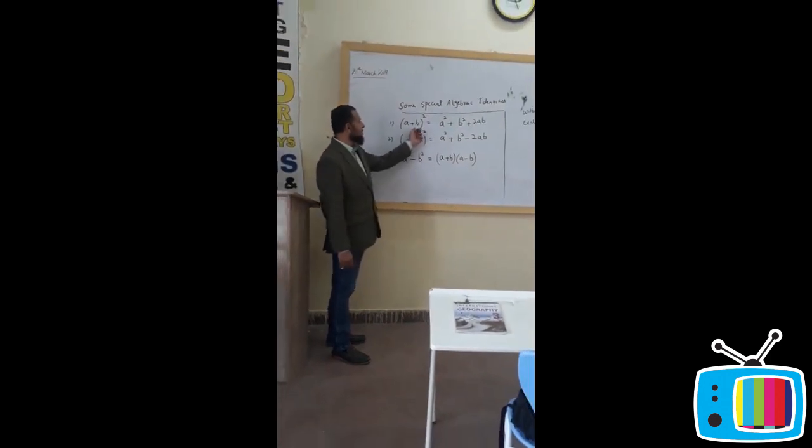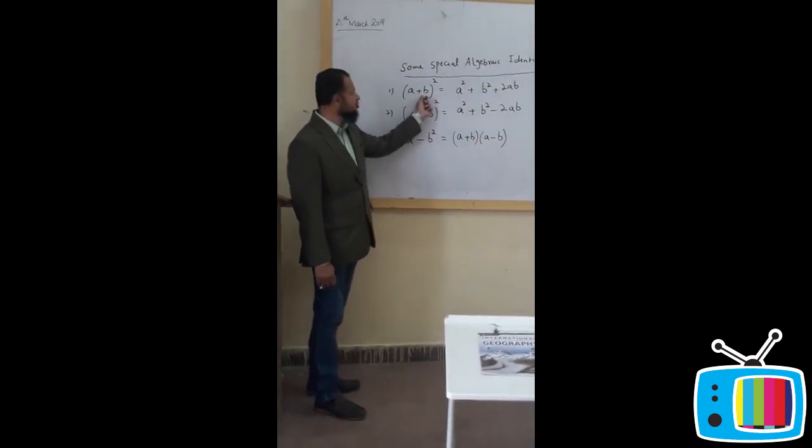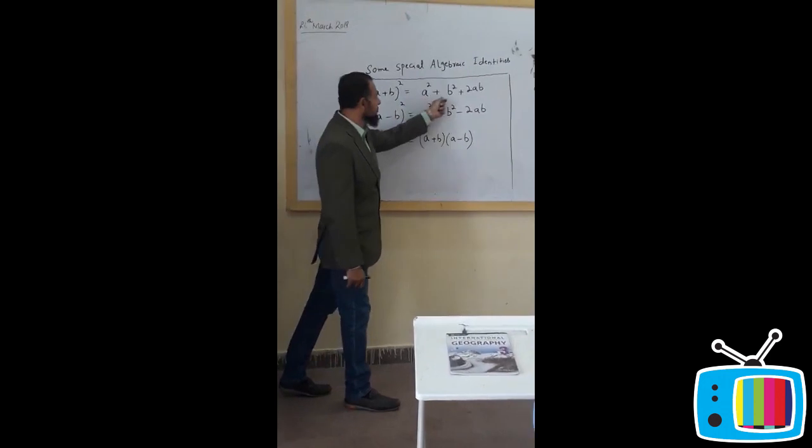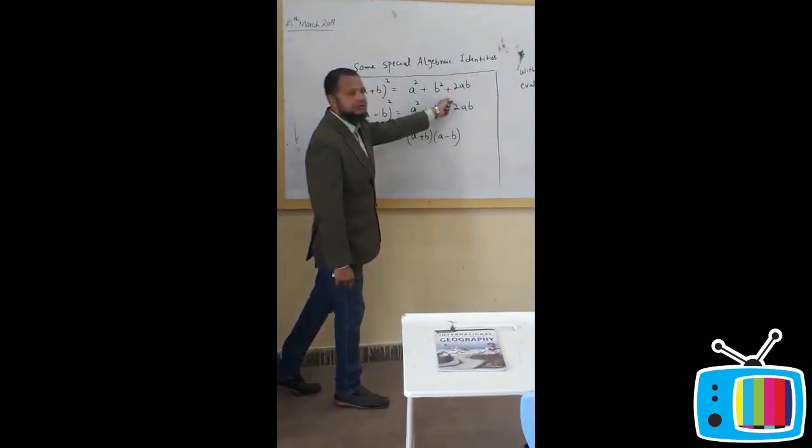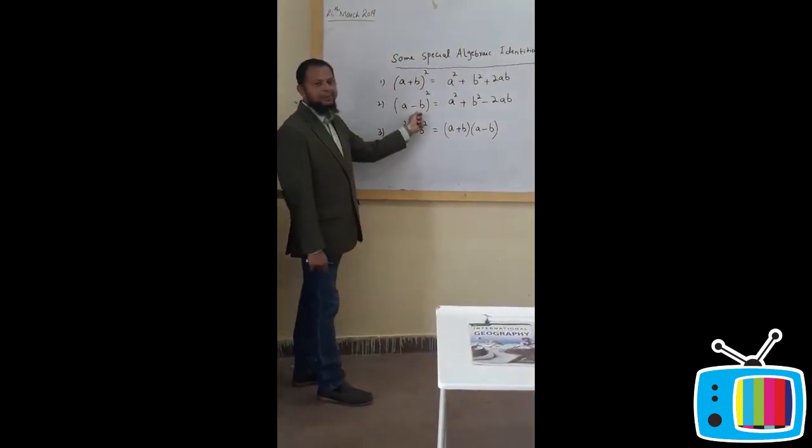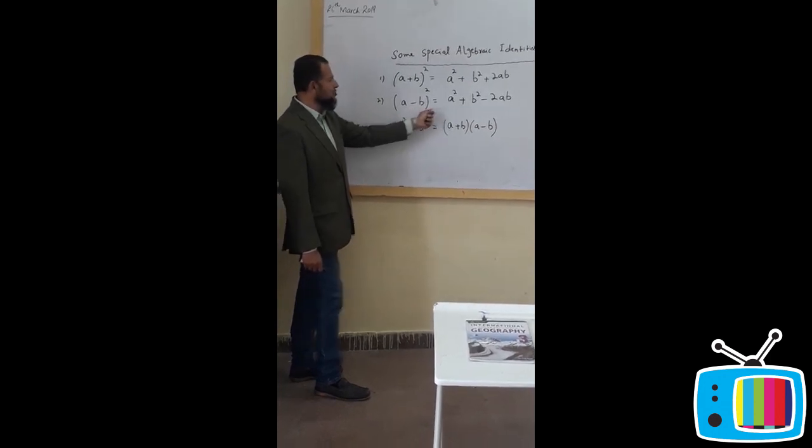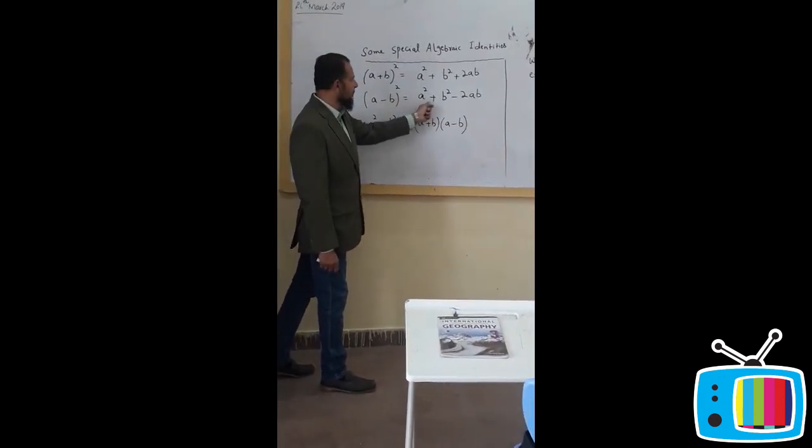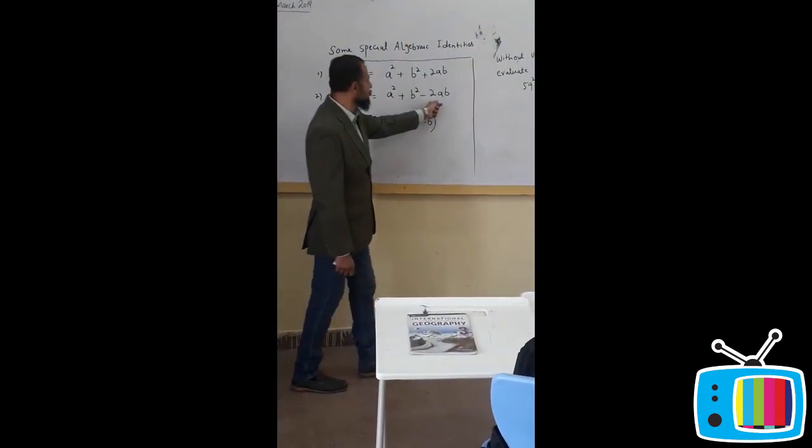The identities are (a+b)² which is equal to a² plus b² plus 2ab. And the second identity will be (a-b)² which is equal to a² plus b² minus 2ab.